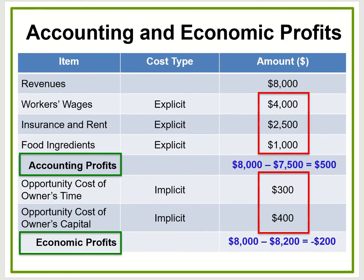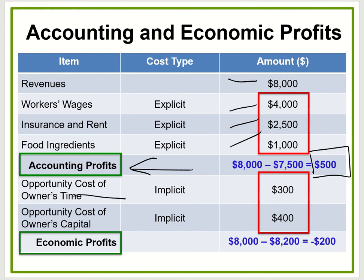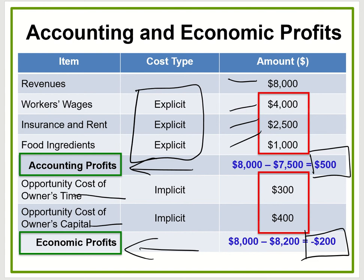For accounting profit for a company, we use revenue minus wage, rent and insurance, and food — and you might show a positive profit of $500 on your books. Remember, this is your accounting profit. But for economic profit, you also subtract your opportunity cost for the owner's time and opportunity cost for the owner's capital. By the end, you actually don't make a profit — you actually lose $200 according to your economic profit. So accounting profit only includes explicit cost; your economic profit includes both explicit plus implicit cost.